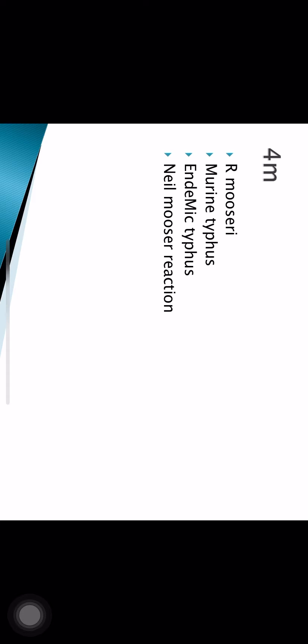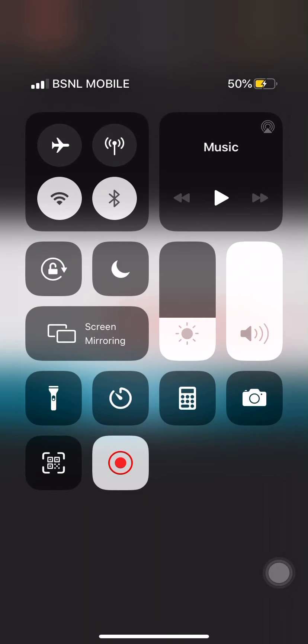A helpful mnemonic is the '4M formula' for endemic typhus: Rickettsia typhi is also known as Rickettsia mooseri (first M), it causes murine typhus (second M), also known as endemic typhus (third M — murine), and the Neil-Mooser reaction is used for diagnosis (fourth M). After the spotted fever group, some other organisms will also be studied, but that will be covered in the second portion.